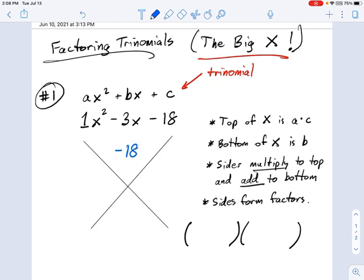Now the bottom of X is B. So which term is in the middle? That's B. That's negative 3. So we've got a negative 3 down here.